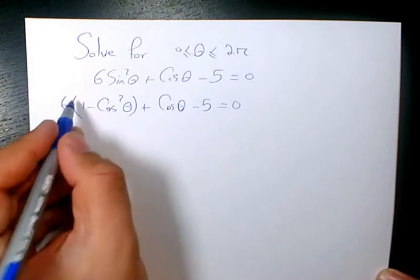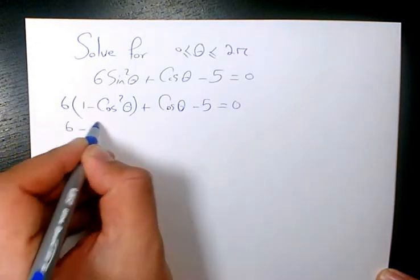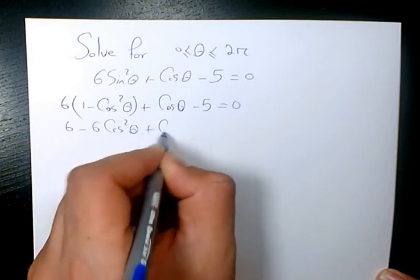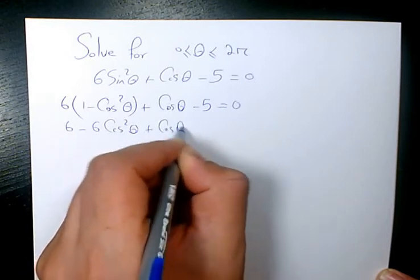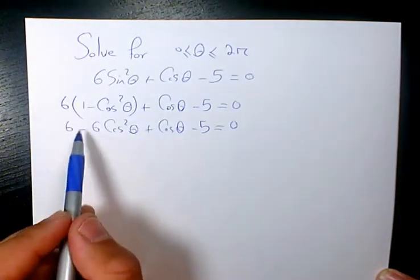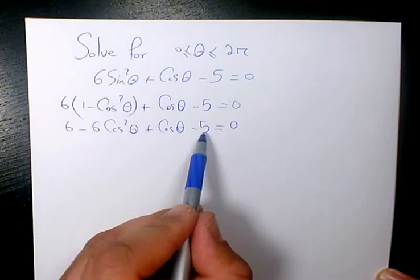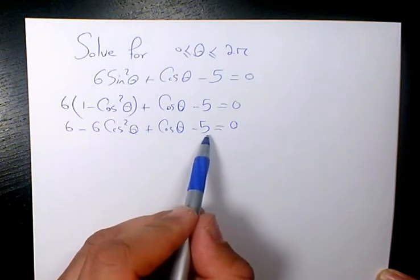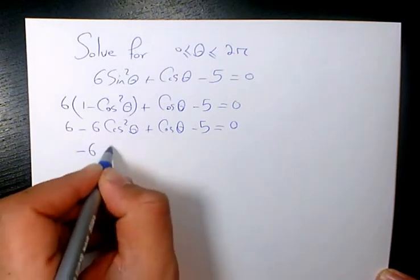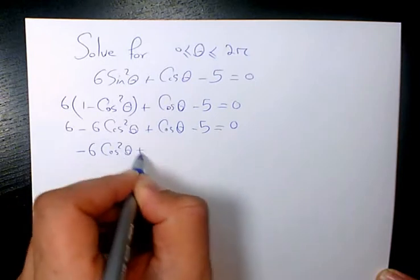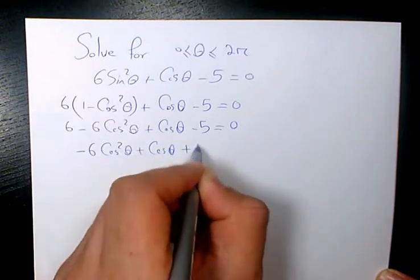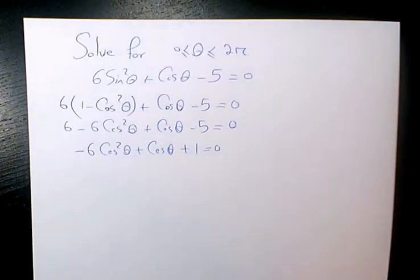Then I distribute: 6 times 1 gives 6 minus 6 cosine squared theta plus cosine theta minus 5 equals to 0. So 6 minus 5 is positive 1, giving us negative 6 cosine squared theta plus cosine theta plus 1 equals to 0.